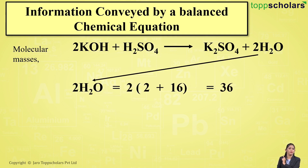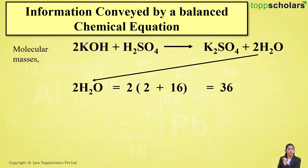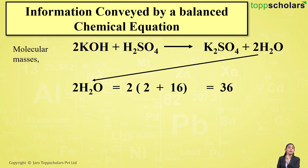Now for water: since we have 2 molecules of water, we calculate 2 × (2×1 + 16), where hydrogen has atomic mass 1 with 2 atoms giving 2, plus atomic mass of oxygen which is 16. When you calculate this, the molecular mass of two molecules of water comes out to be 36.